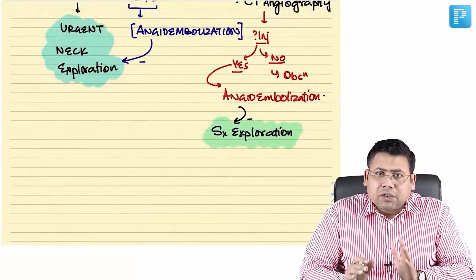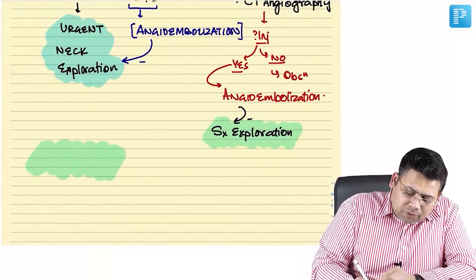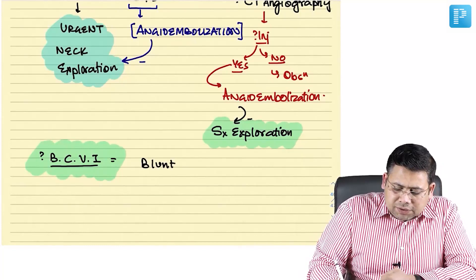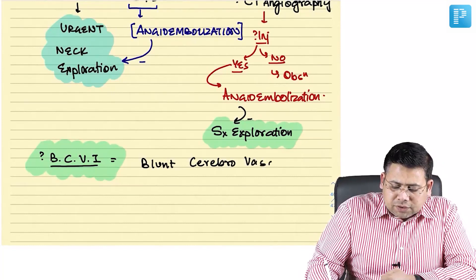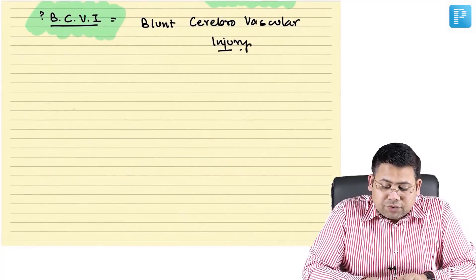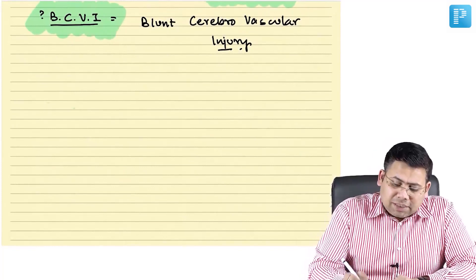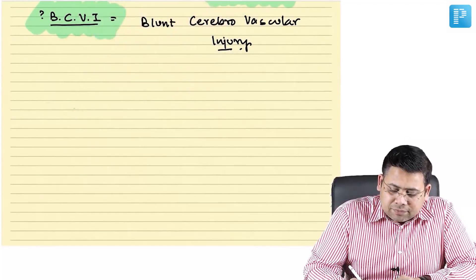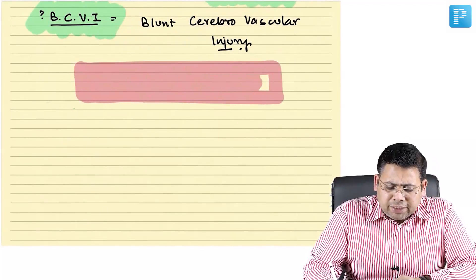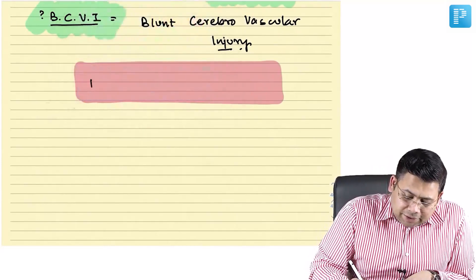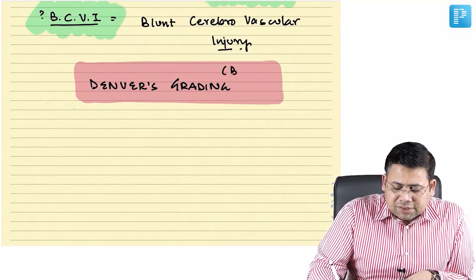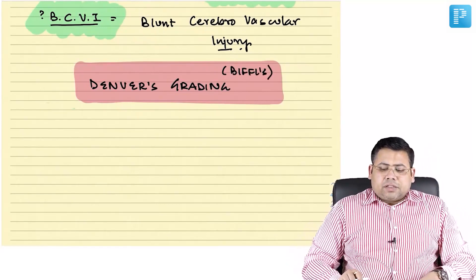There is a category of injury associated with blunt trauma: BCVIs — blunt cerebrovascular injuries. For BCVIs, we use a grading system called Denver's grading, also known as Biffle's grading. This has been asked in AIIMS MCh entrance examinations.